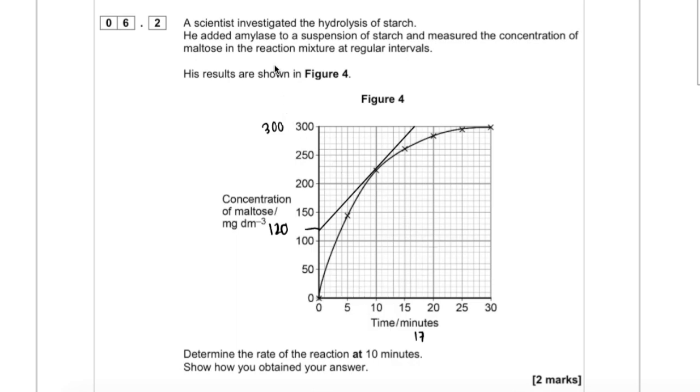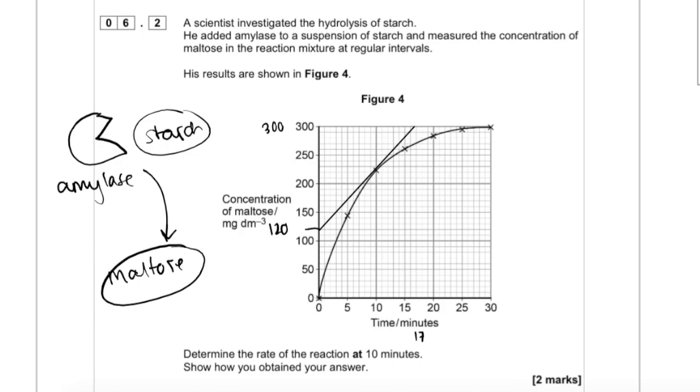So the second part - they've given us a graph. They've investigated the hydrolysis of starch. They've added amylase to starch and then measured the concentration of maltose in the reaction mixture at regular intervals. So if we think about it, they've got an enzyme here, amylase, and they've added starch to it. Amylase has hydrolyzed starch into maltose, and here are the results.